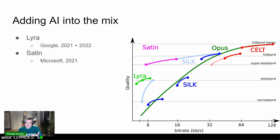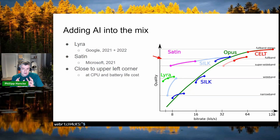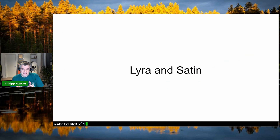Then in 2021 and 2022, two new codecs emerged. Lyra from Google had version 1 in 2021 and version 2 in 2022. Microsoft pushed the Satin codec into Microsoft Teams in 2021. Both get much closer to the upper-left-corner goal, but at the cost of CPU and battery life. Blog posts for both codecs describe significant effort spent optimizing for CPU and battery performance.